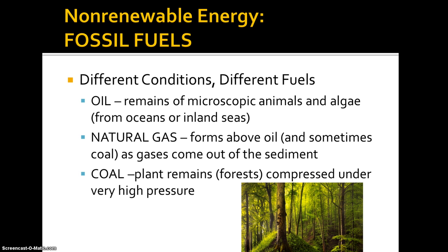Coal primarily came from forest areas. Some coal can form from shallow wetlands, bogs, and marshes, but primarily forests that existed millions of years ago dropped leaves and debris onto the ground, formed peat first, and then through compression concentrated the carbon and hydrogen under high pressure and lots of time.